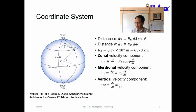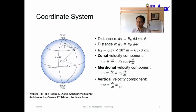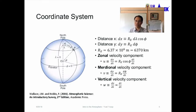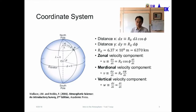I prefer not to use the word 'vertical' for the meridional direction, because 'vertical' tends to mean from the surface of the ground upward. In this case, it refers to the north-south direction. The vertical velocity component refers to the average velocity at a certain height from the surface of the ground.